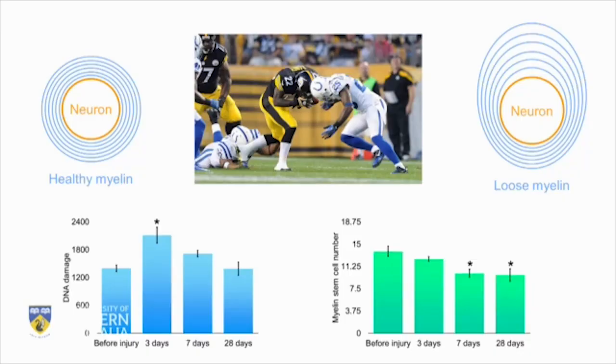One of the main reasons this is thought to occur is because the myelin stem cells that normally replace and repair damaged myelin in a healthy nervous system die following neurotrauma due to exposure to these oxidants. So I wanted to know if the masses of oxidants present following neurotrauma are damaging these myelin stem cells and causing their numbers to decrease.